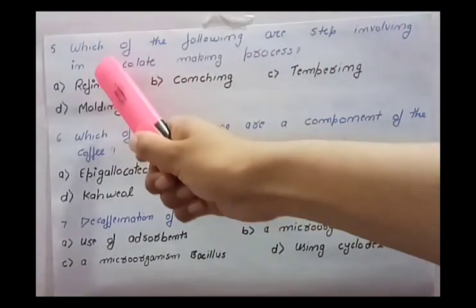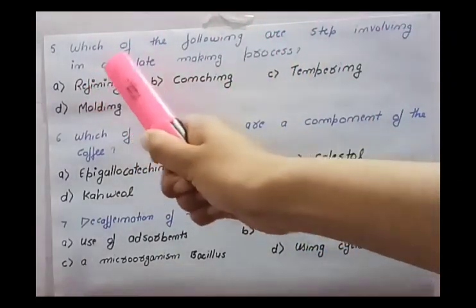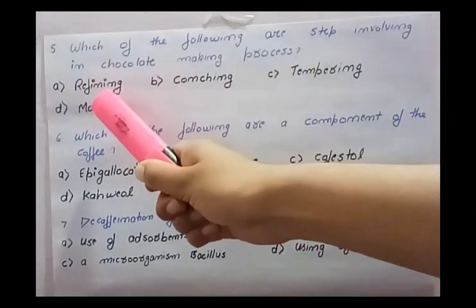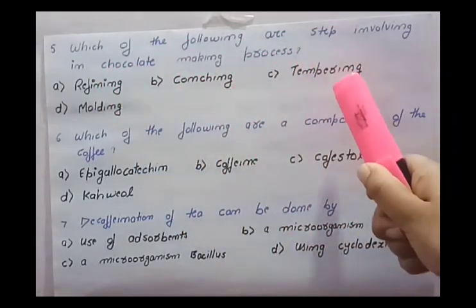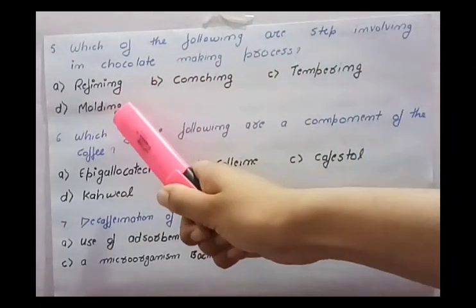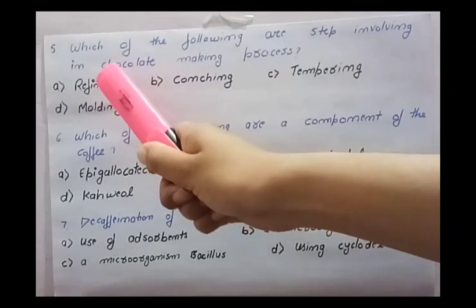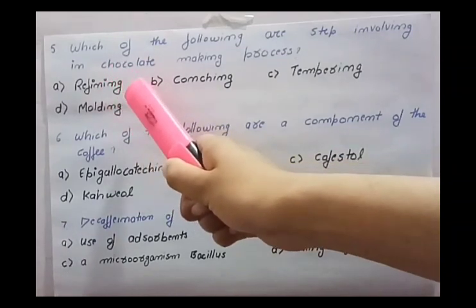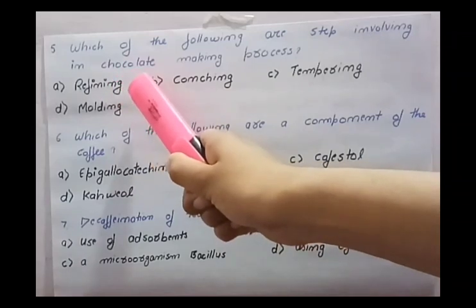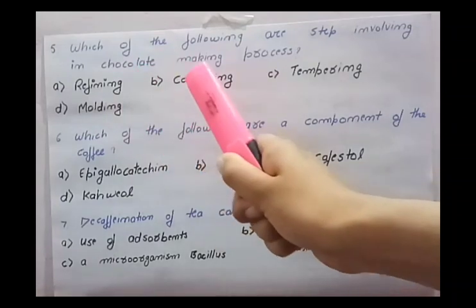Fifth question: which of the following are steps involved in the chocolate making process? The options are refining, conching, tempering, and molding. First option is refining — yes, refining is used in the chocolate making process. Refining means grinding the chocolate into small particles to make a smooth texture.